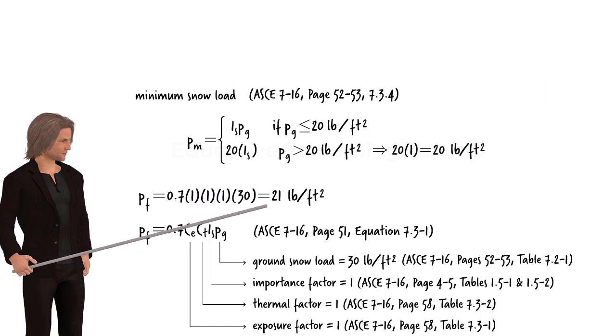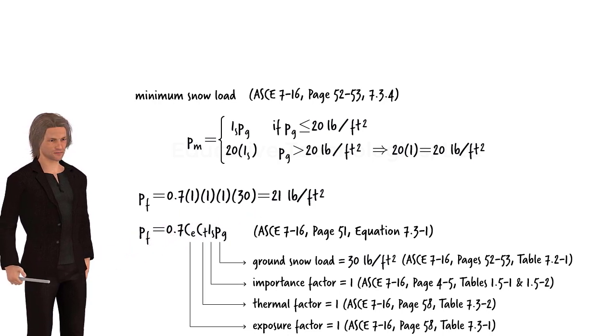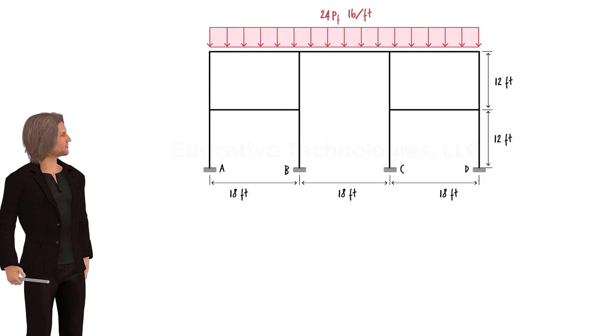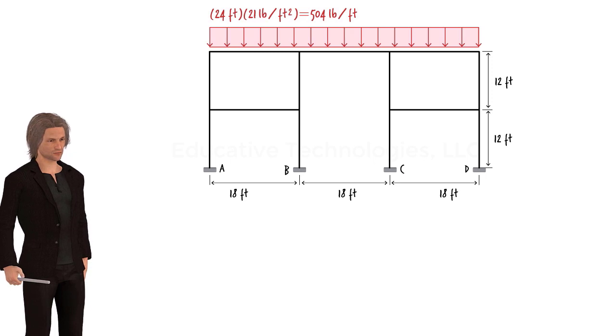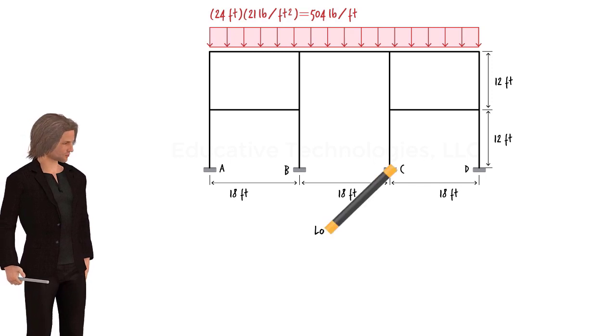Since the calculated P-F is greater than the minimum load, we will use 21 pounds per square foot for the roof snow load. Therefore, the magnitude of the uniformly distributed load on the frame becomes 504 pounds per foot. We need to analyze the frame under this particular loading case, which assumes that snow has covered the entire tributary roof area for the frame. We refer to this as load case zero.